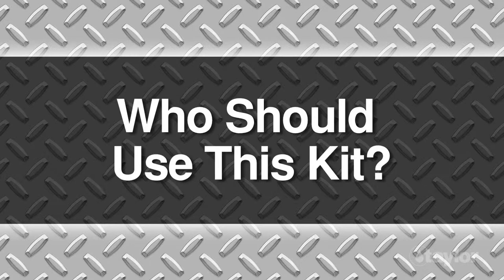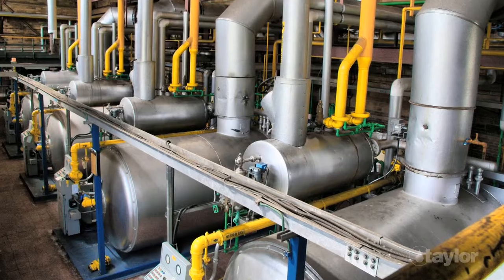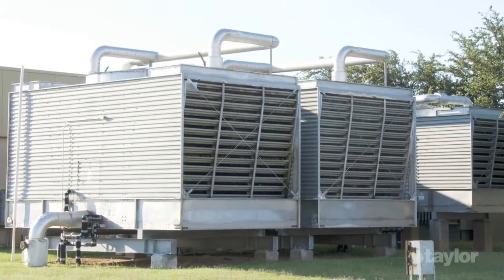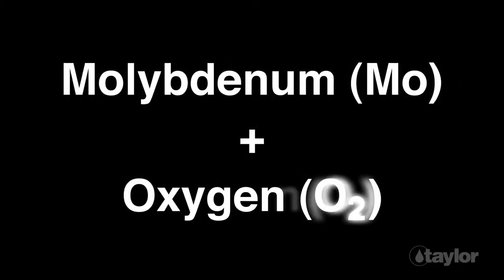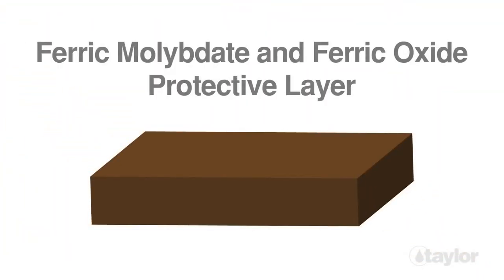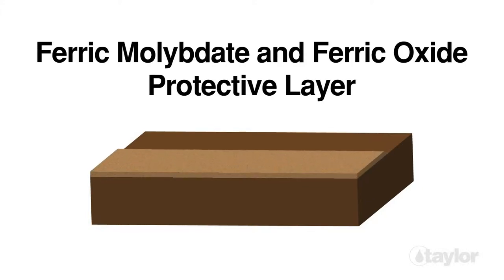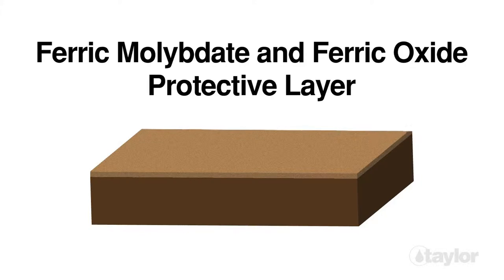Who should use this kit? Molybdenum-based products are used in boiler and cooling towers to inhibit corrosion. In these aqueous systems, the molybdenum combines with oxygen to form molybdate. The molybdate is then absorbed onto the porous metal oxide surfaces where it reacts with the iron. This reaction produces an insoluble film of iron molybdate that protects the metal from other ions that induce corrosion.